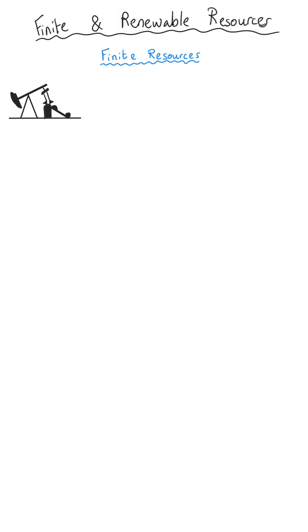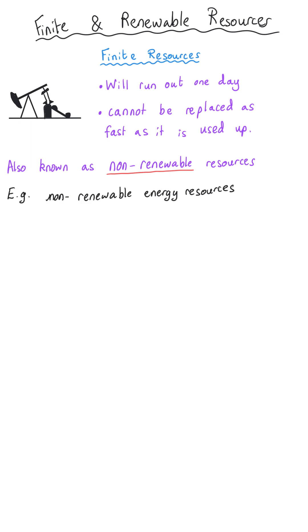A finite resource is a natural resource that will run out one day because it's not being replaced as fast as it's being used up. This type of resource is also sometimes called a non-renewable resource and you come across that term in the GCSE physics course as well for non-renewable energy resources.